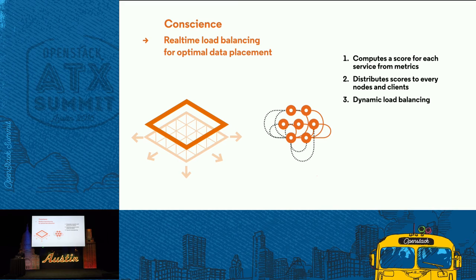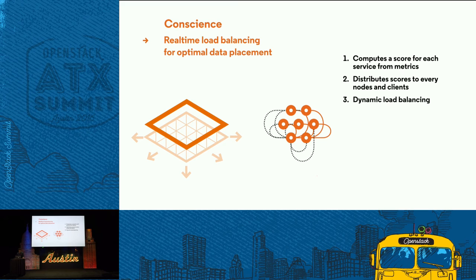For the storage pool, since data placement isn't consistent-hashing-based or static, we have a process called the conscience. The conscience knows every node of the grid, how it behaves, and its performance. We poll it for metrics every time we have the opportunity, compute a score from that, and distribute it to all clients and nodes of the grid. This enables dynamic load balancing — when you put data, you want to be sure the node you're contacting is up and has good performance.